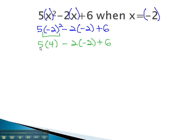Next, we multiply, and as the terms are separate terms, we can do the multiplication at once. 5 times 4 is 20. Negative 2 times negative 2 is positive 4, plus 6. Finally, we can add the expression from left to right, 20 plus 4 plus 6, to get 30.